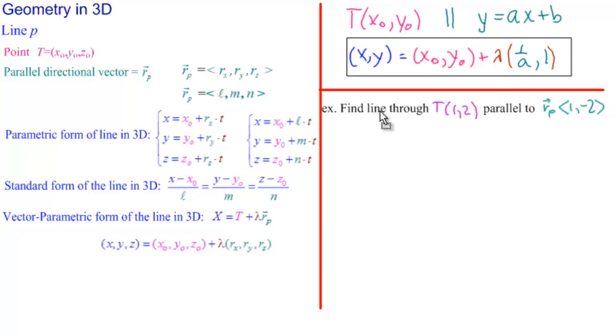Suppose we were given a typical problem from 3D but now in 2D. Find the equation of the line through t parallel to the directional vector 1 minus 2. How would we make it into this form that we like, y equals ax plus b?